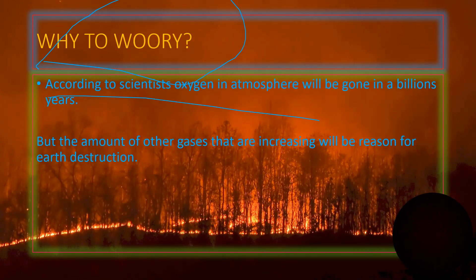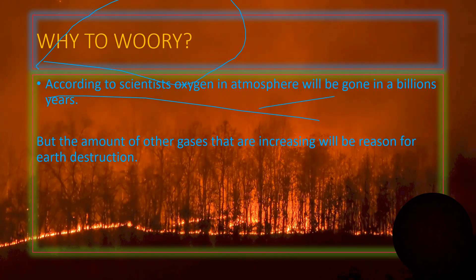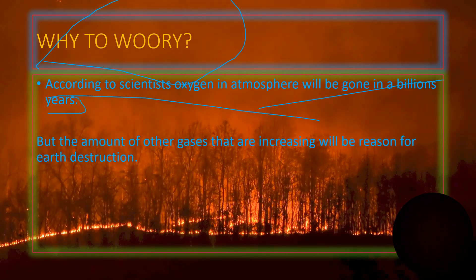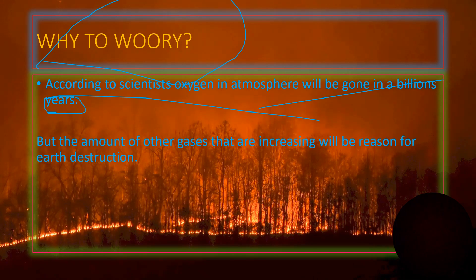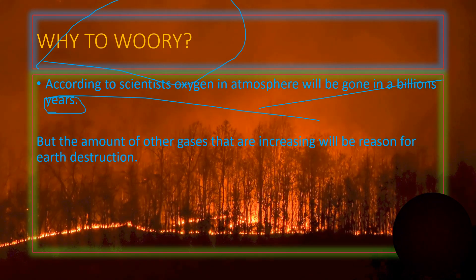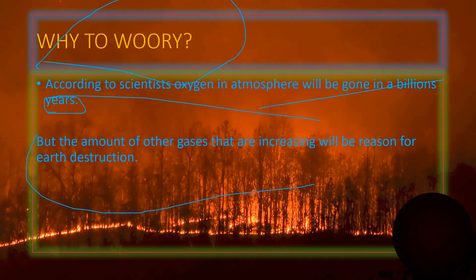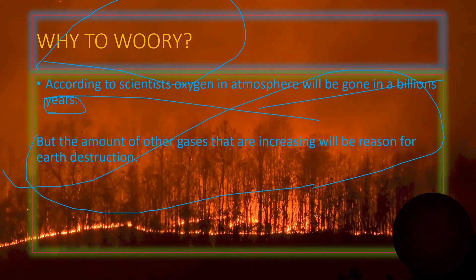According to scientists, oxygen in the atmosphere will be gone in a billion years. It will take a billion years for oxygen to be fully vanished from the Earth. But the amount of other gases that are increasing will be the reason for Earth's destruction.